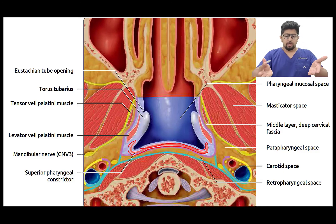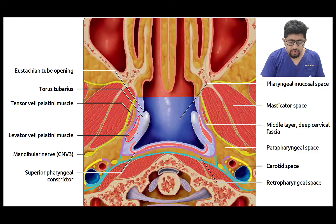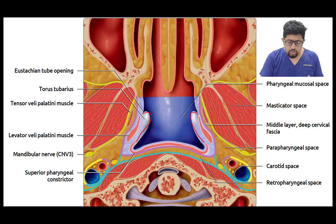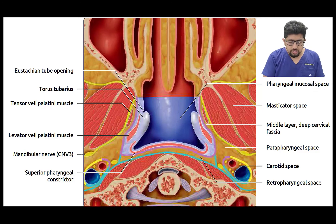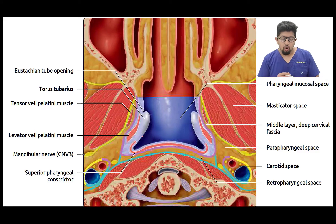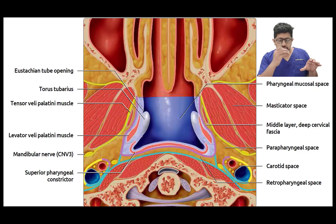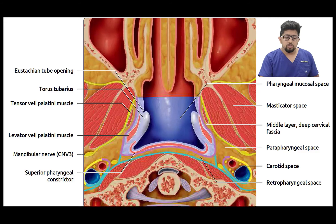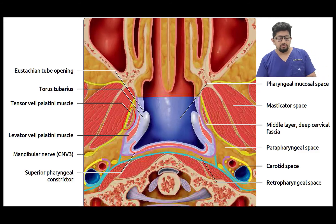Higher up toward the cranial aspect, the superior constrictor continues as the pharyngeobacillar membrane. In the lateral aspect, we see the levator palatine muscle and the torus tubarius, formed by the eustachian tube along with its opening. The lateral aspect of the nasopharynx forms a recess — the lateral recess of the nasopharynx — where the eustachian tube opens, the levator palatine muscle is present, and more anterolaterally the tensor palatine muscle is found.